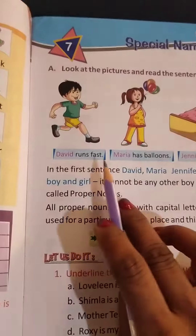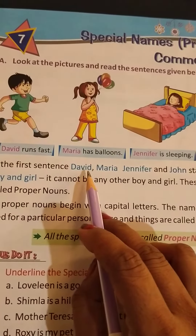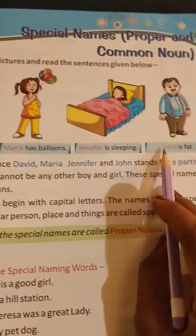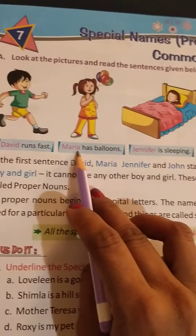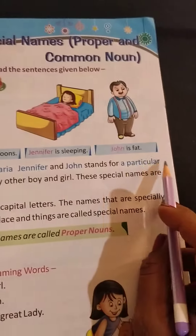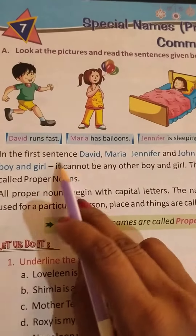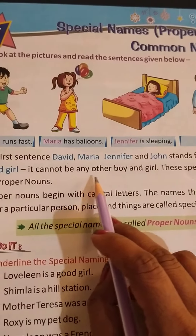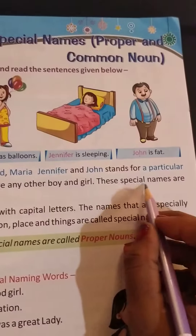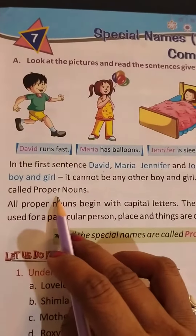Dekhiye students, yeh jo upar sentence diya hua hai, first sentence mein jise diya hua hai — David, yeh naam se inko bataya ja raha hai ki yeh David hai, yeh Maria hai, yeh Jennifer hai, yeh John hai. This is particular. Yeh particular boy and girl ke name hain, aur yeh kisi aur boy and girl se change nahi ho sakti. Okay students, this special name, aur inhi special name ko kya kehte hain — proper noun.